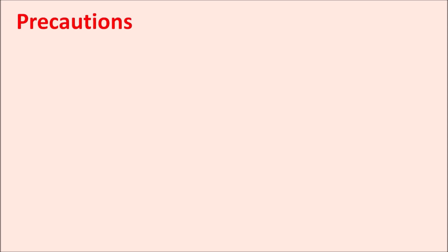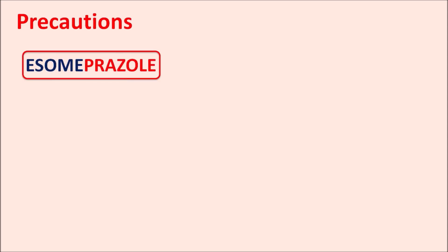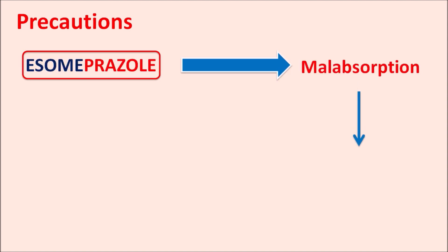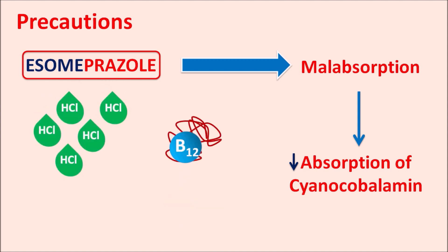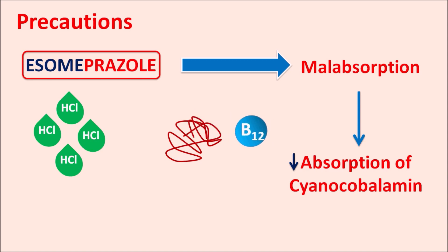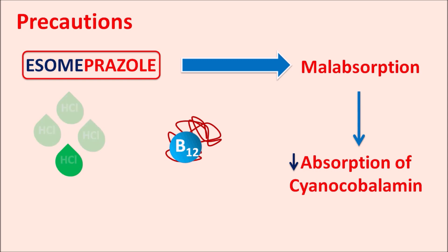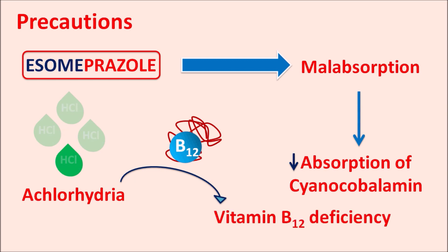One important precaution of this drug is that it can produce malabsorption — specifically, it can reduce the absorption of cyanocobalamin, vitamin B12. Normally, gastric acid is required for the absorption of vitamin B12, which is associated with a protein. Gastric acid digests this protein and releases vitamin B12 for absorption. But with S-omeprazole, gastric acid secretion is inhibited, resulting in achlorhydria, which leads to decreased absorption of vitamin B12 and vitamin B12 deficiency.